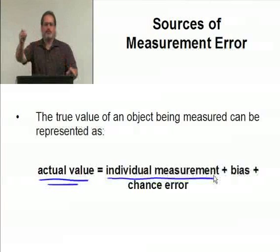That's what you measure when you went out and made contact with this item, person, whatever and collected the data. It's the result of your individual measurement plus the bias, if it exists, and plus the chance error.